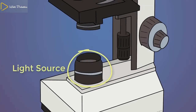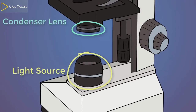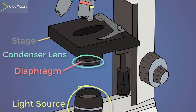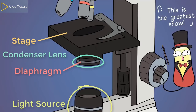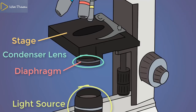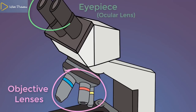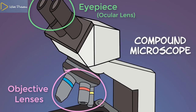Here is our light source. Light passes through this — the condenser lens — to focus the light on the specimen. The level of light can be adjusted by the diaphragm. Our specimen, likely on a microscope slide, will be placed on the stage here. Light will be reflected, refracted, or absorbed by the specimen. We rely on these lenses here — the objective lens and the eyepiece lens — to get our total magnification. This is often referred to as a compound microscope because it has two sets of lenses.